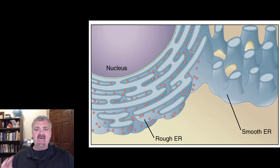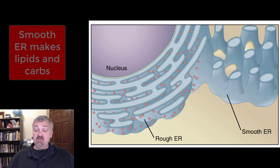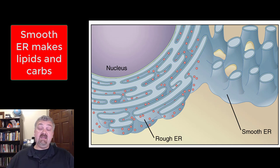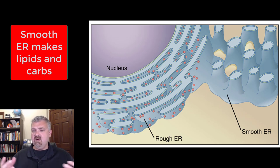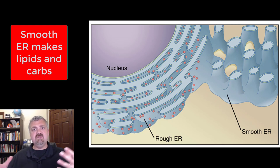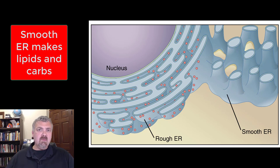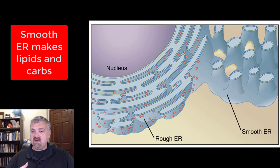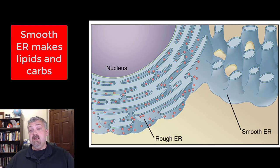The smooth ER doesn't have any ribosomes, so don't think proteins — instead it makes lipids and carbohydrates, and it's still wildly important. This is where the cholesterol and phospholipids for your cell membranes come from. This is also where steroid hormones are produced. The smooth ER inactivates and neutralizes toxins. And this is the structure where glucose is turned into glycogen, like in your liver cells and muscle cells — very, very important.